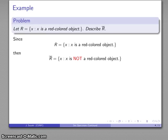So R complement is going to be the set of things that are not red-colored objects. And there's our description of the complement.